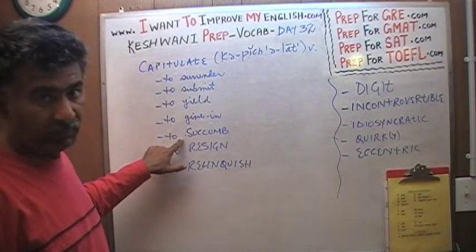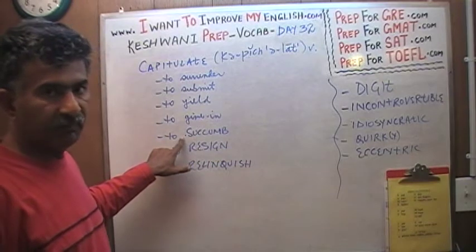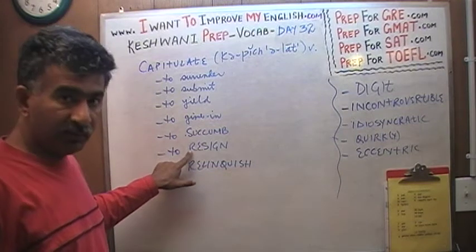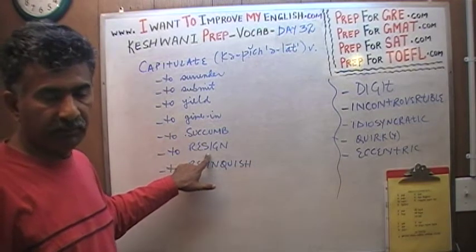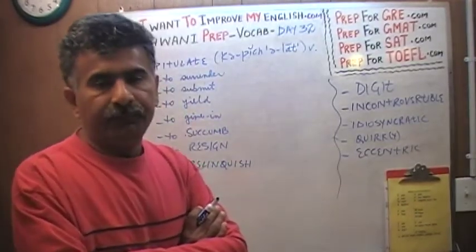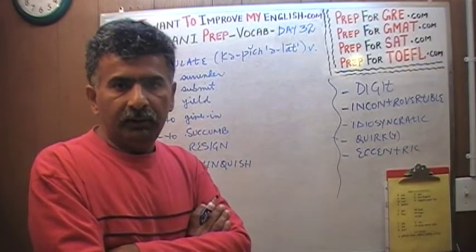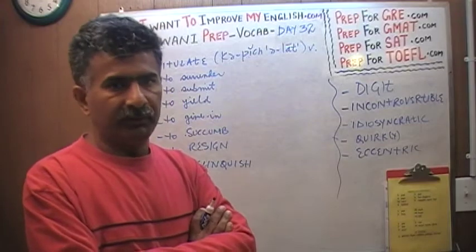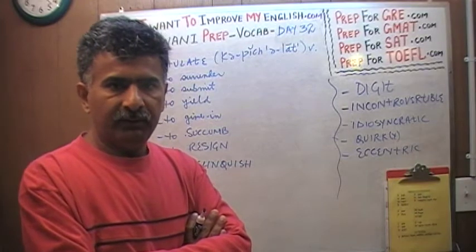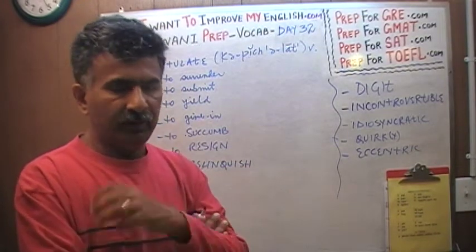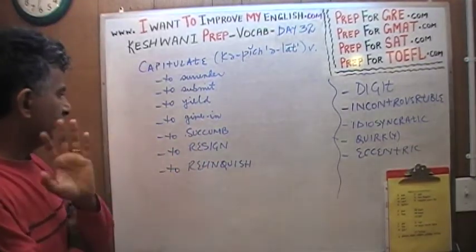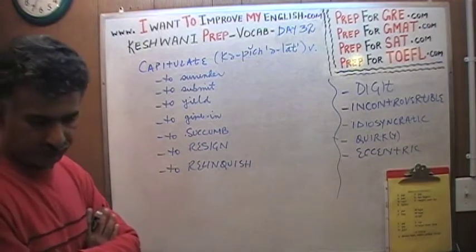Succumb also has one more meaning — it also means to die — but here the word succumb is being used as: if you succumb to something, you give in finally, you surrender. To resign also has two meanings: the first meaning most people know is to stop working. But in the broader sense, to resign also means to give in to something. 'I resign' means I give up, I am not going to try anymore — I tried five times, nothing happened, so I resign: I surrender, I give in, I capitulate, I yield, I submit, I relinquish.